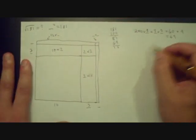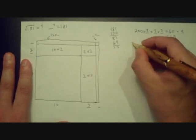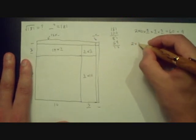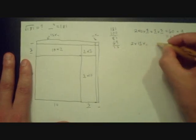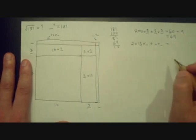Okay, so I'm going to rewrite it over here. And so, I get 2 times 13 times blank, plus blank times blank. And this time, I want it to equal about 12.